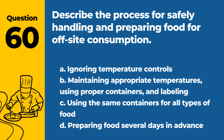Question 60. Describe the process for safely handling and preparing food for off-site consumption. A. Ignoring temperature controls. B. Maintaining appropriate temperatures, using proper containers, and labeling. C. Using the same containers for all types of food. D. Preparing food several days in advance. Answer: B. Maintaining appropriate temperatures, using proper containers, and labeling. Safely handling and preparing food for off-site consumption involves maintaining appropriate temperatures, using proper containers, and labeling to ensure food safety.